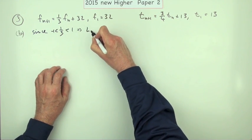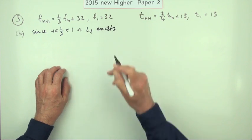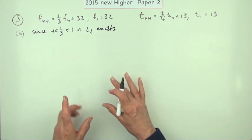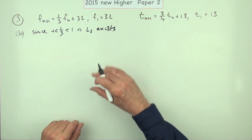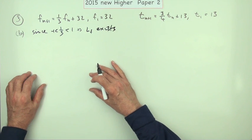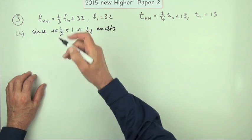You should really state the reason why you were doing that. I'm going to say for the frog: since 1/3 is less than 1 and greater than -1, that means a limit, called the limit of frog, exists. Now I would have thought that would have been a mark, but it's not. Just set it out the way you think you should.